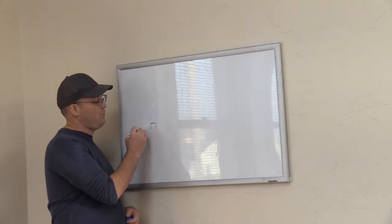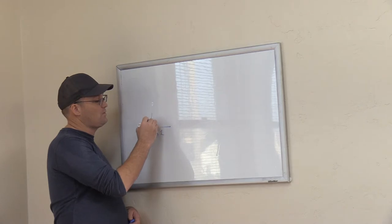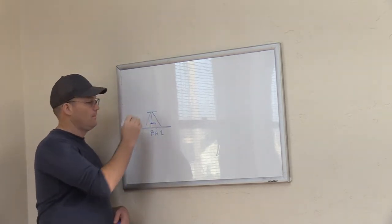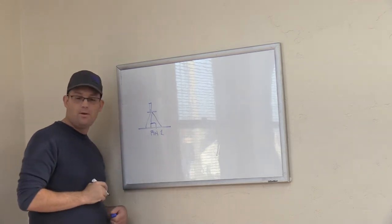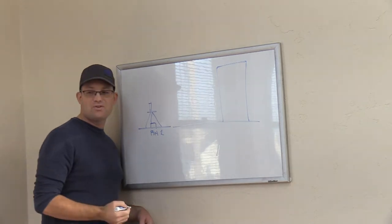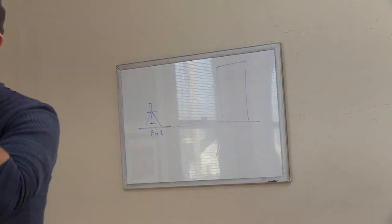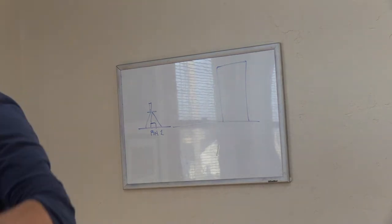So here's our control point RH1, and we got a total station set on it. And then somewhere over here we got a building. And we measure a zenith angle. Does anybody know what a zenith angle is? From the top, from the zenith.